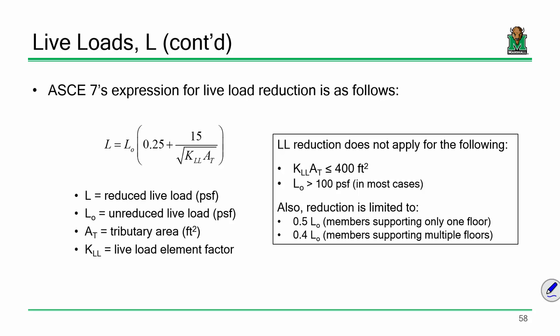Now, inside this equation there are a couple of issues to address. First, live load reduction does not apply any time that K-LL times A-T is less than 400 square feet. One reason is that if you plug in a value less than 400, the term in parentheses ends up being larger than one — meaning instead of reducing the live load, you'd actually amplify it. That's just a limitation of the curve-fit equation. Another reason: if K-LL times A-T is less than or equal to 400 square feet, you're talking about a member that's not responsible for very much area. It's such a small area, you might as well design the member for the full load anyway. It's only when members are responsible for a whole lot of area that live load reduction starts to have its benefits.